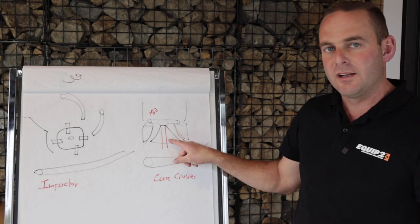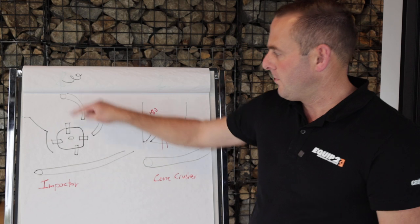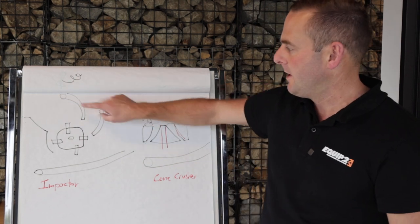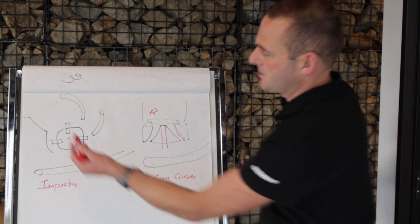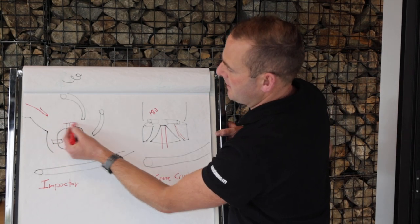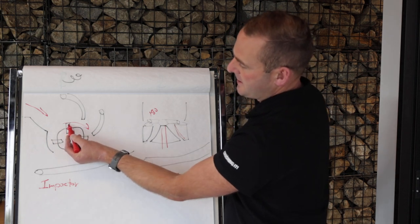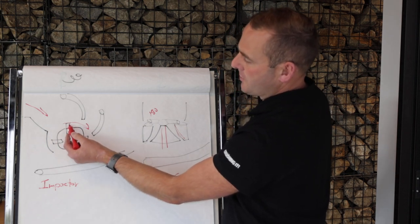With the impactor, we've got our primary apron and our secondary apron. Your primary crushing is done in here. Your stone's entered in through the chamber and this rotor spinning clockwise, and as that stone comes through, it's smashed. 80% of the rock is broken at the blow bar and then the rest against the apron or autogenous crushing.